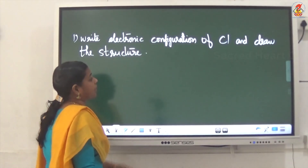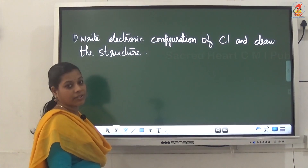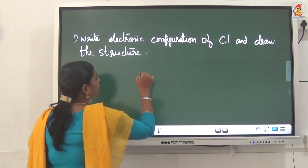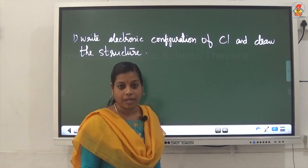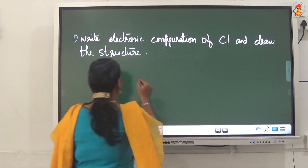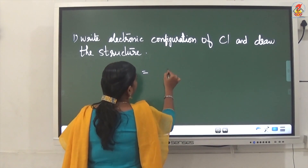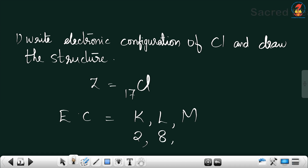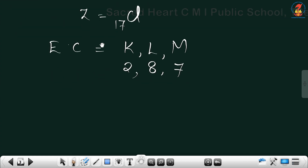Write the electronic configuration of chlorine and draw the structure. Structure drawing we have seen in the last video. For the configuration of chlorine, you should know the atomic number of chlorine, which is 17. So the electronic configuration is K=2, L=8, M=7.